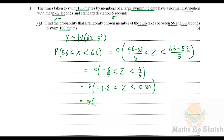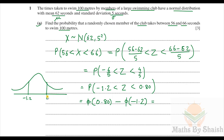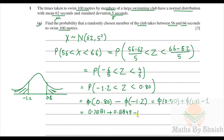This becomes Φ(0.80) − Φ(−1.2). Since Φ(−1.2) = 1 − Φ(1.2), this equals Φ(0.80) + Φ(1.2) − 1. From the distribution tables: 0.7881 + 0.8849 − 1 = 0.6730. So the probability is 0.673.